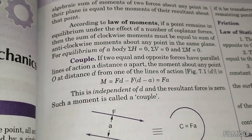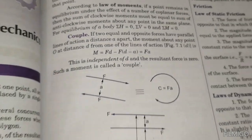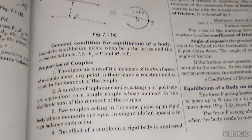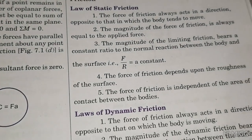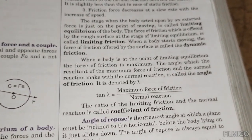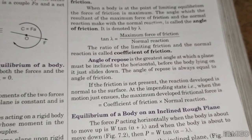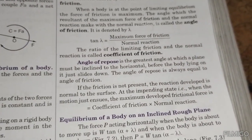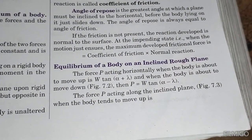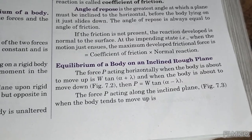The moment M equals F times d. The ratio F divided by R_N equals a constant, which is the coefficient of friction. Tan alpha equals maximum force of friction divided by normal reaction, defining the angle of friction. The angle of repose equals the angle of friction, where F equals mu times R_N. For equilibrium on an inclined plane: P equals W tan alpha, where alpha is the angle of inclination.